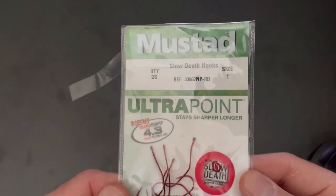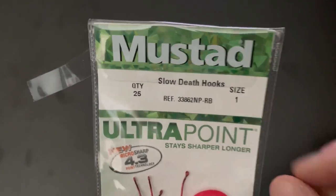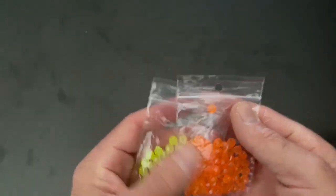You're going to start by buying Mustad Slow Death Hooks. Size 1 is what I use, good for a variety of fish in the Great Lakes. Then you're going to use some attractive beads, pick the color of your choice. These are the colors I chose because they work well in the area I fish.